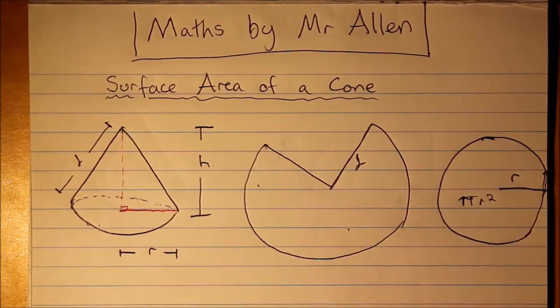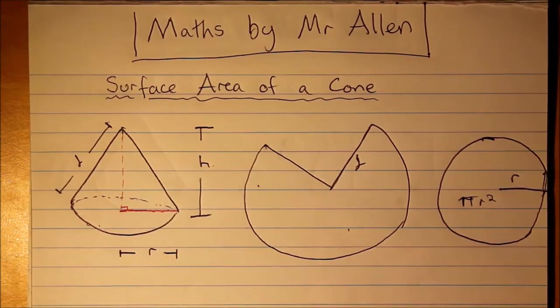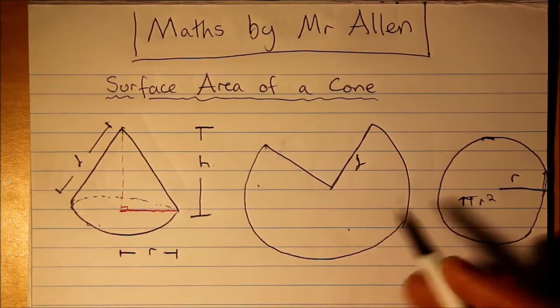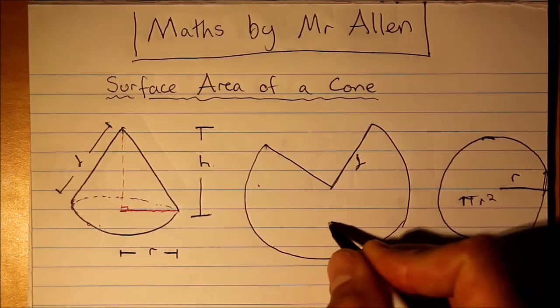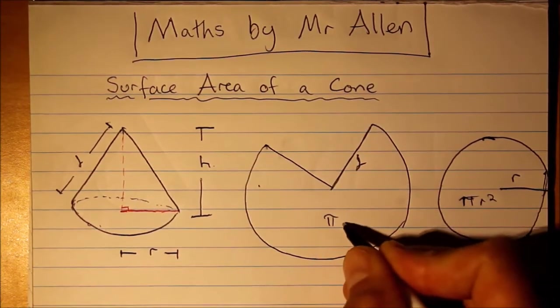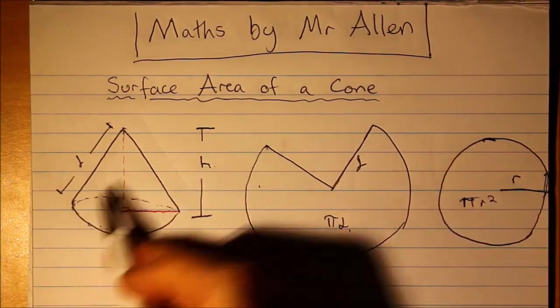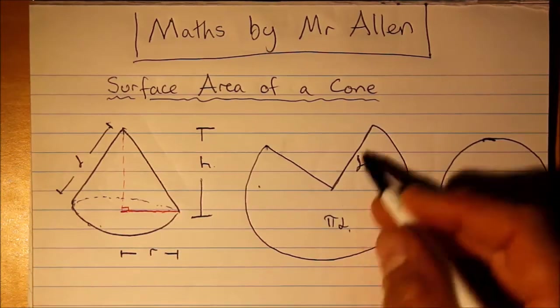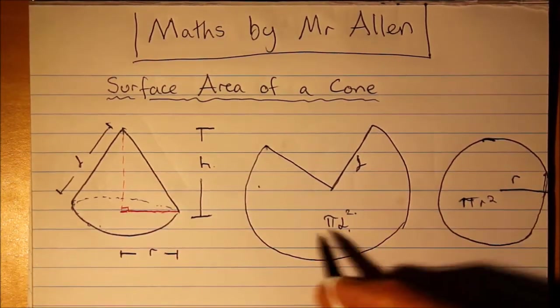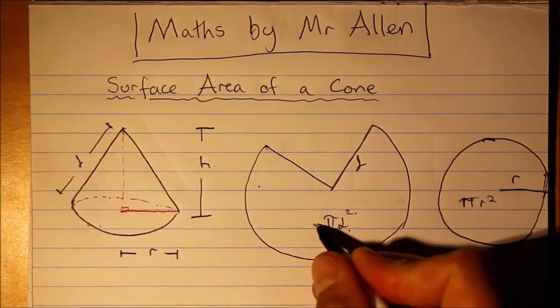It's some fraction of a circle, and if we were to have a full circle, it would be πl. Let's call l the slant height, so that would be the radius of that. But it's not a full circle, so it's some fraction of that.